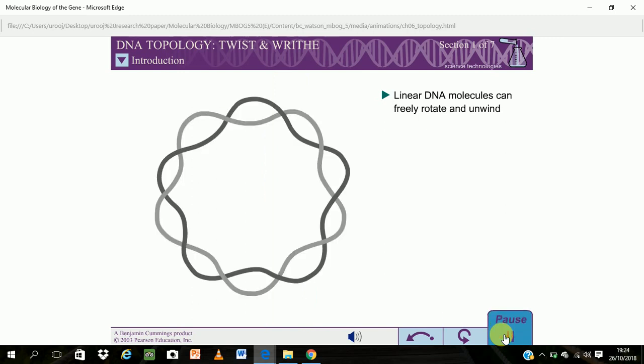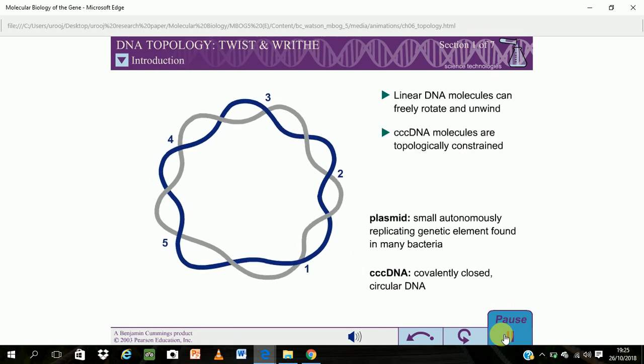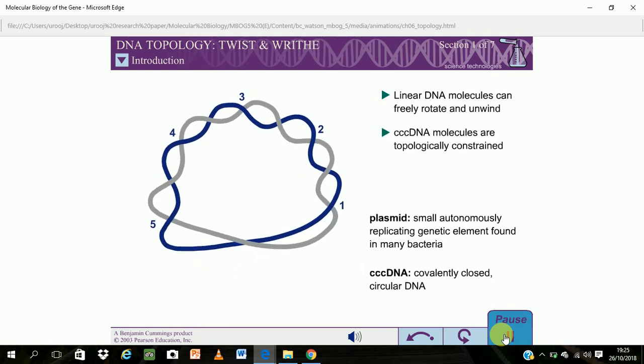However, DNA molecules can also be circular. Examples of circular DNA molecules include most bacterial chromosomes, some viral chromosomes, and small bacterial genetic elements called plasmids. For such covalently closed circular DNA, the absolute number of times the chains coil about one another cannot change. These DNA molecules are said to be topologically constrained.